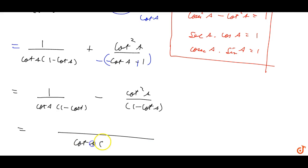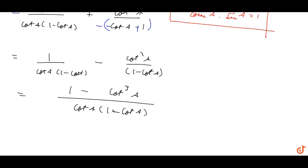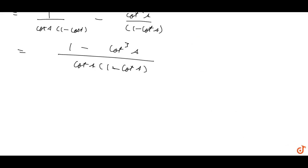We get 1 minus cot cube A upon 1 minus cot A. Now we use the identity A cube minus B cube equals A minus B into A square plus B square plus AB.